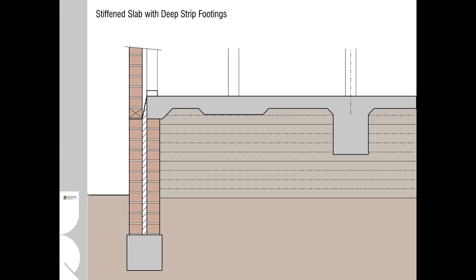We then start to get into other more hybrid solutions and these are contingent on the site situation and the project situation. So here we see quite a deep strip footing with a controlled fill underneath a stiffened slab. So this is a solution that one would use in lieu of a cut and fill site where the ground was not disturbed quite as much.